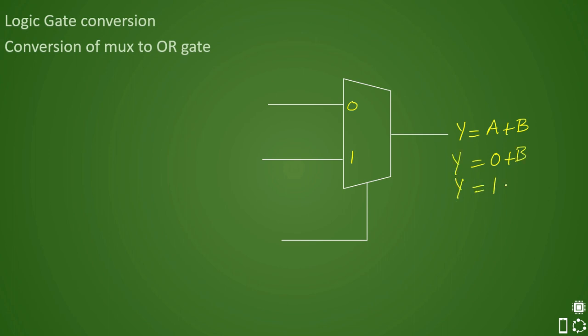But let us say if A is one, then it becomes one. So with similar logic, we can see that if A is your select line, all we need to do is we need to figure out that if we connect A as one, the output will always come as one. And if A is zero, then output should come out as B. This is as simple as that. So this will become our OR gate, which is constructed from two input MUX.